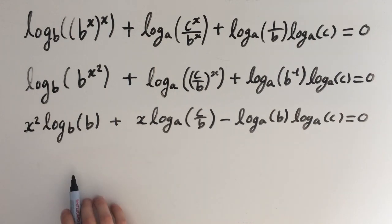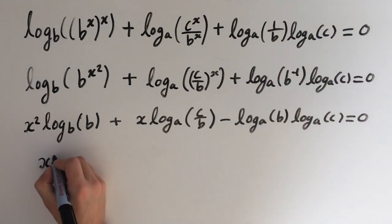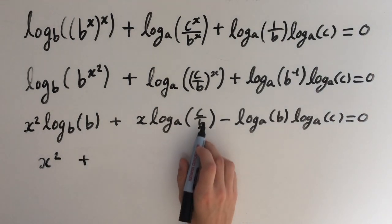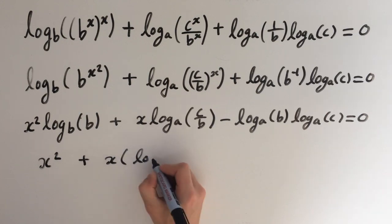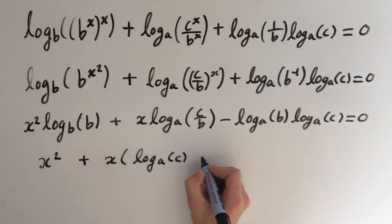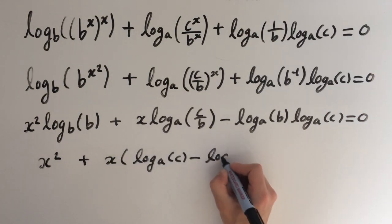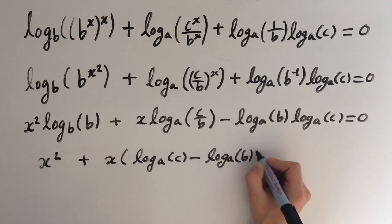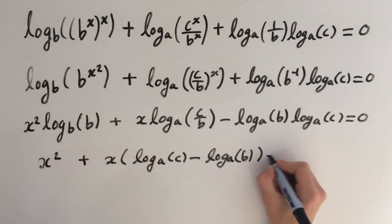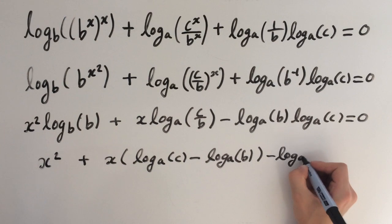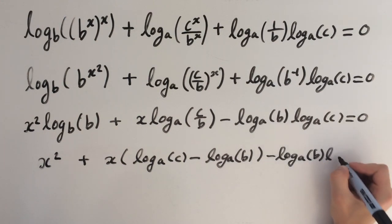We can simplify this even further. Log of b with base b, well that's just 1. So we're going to get x squared here at the front. And we've got a division here, so we can use our division law. So we'll have x times log base a of c, minus log base a of b. And we can't change this, so we'll have minus log base a of b, times log base a of c, and this equals 0.